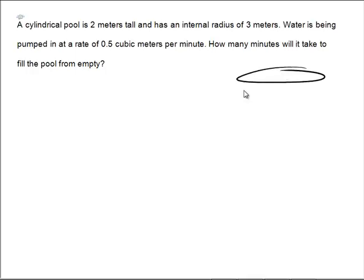Assuming you tried it, we have a cylindrical pool. We'll work it out together now. A cylindrical pool, and it's 2 meters tall, and it has an internal radius of 3. So this time it was given 3 as the internal radius. And we are trying to fill it, so we're throwing in water this time at a rate of 0.5 cubic meters per minute.